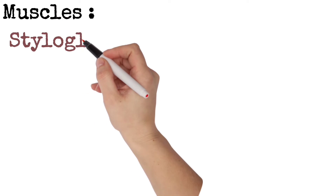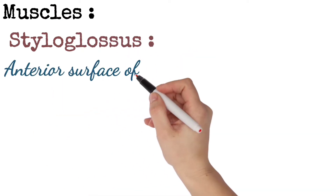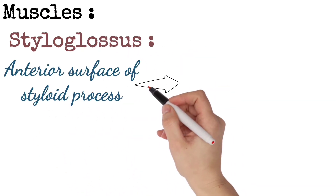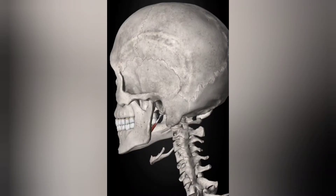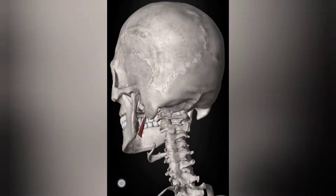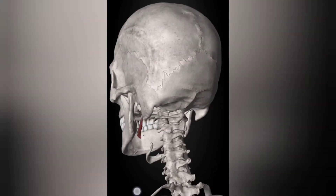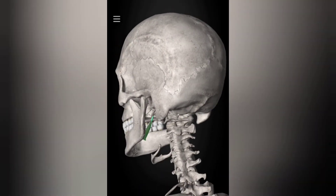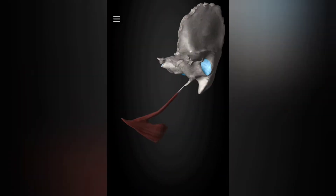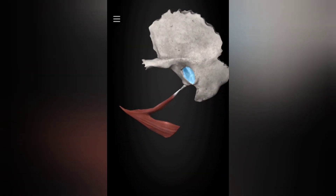Styloglossus muscle. From the name itself, we can tell its origin and insertion. It originates from the anterior surface of the styloid process and is inserted into the side of the tongue.